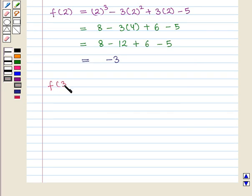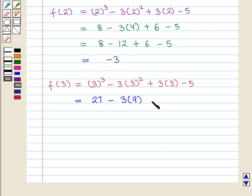Similarly, f(3) will be given by 3³ - 3(3²) + 3(3) - 5, and this is equal to 27 - 3(9) + 9 - 5. So this is equal to 27 - 27 + 9 - 5. On solving it further, we get 4.